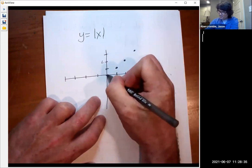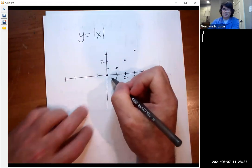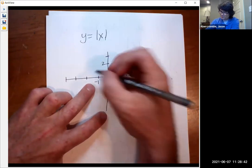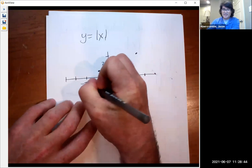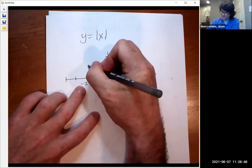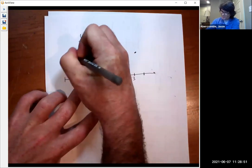If I put in zero, the absolute value of zero is zero. And now if we go over to negative one, the absolute value of negative one is positive one. If I put in negative two, the absolute value of negative two is positive two. And we end up with this V shape.